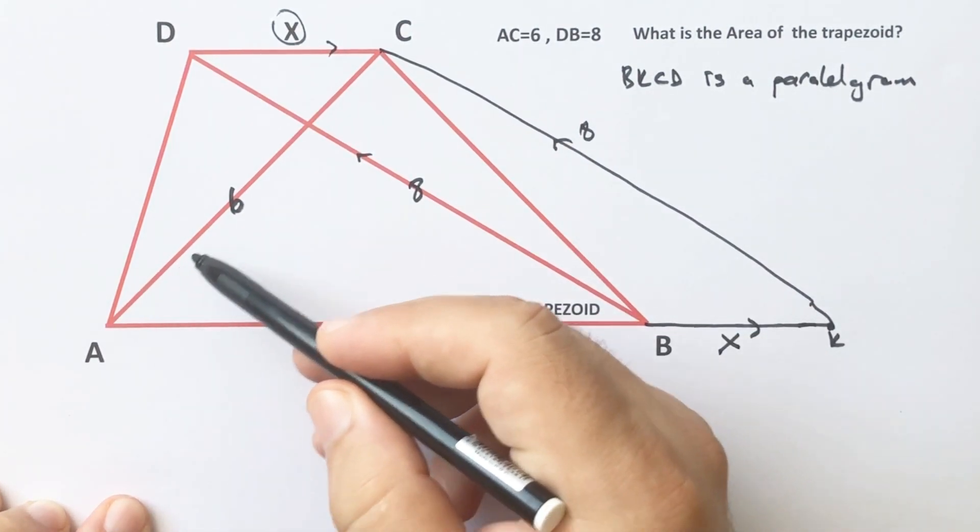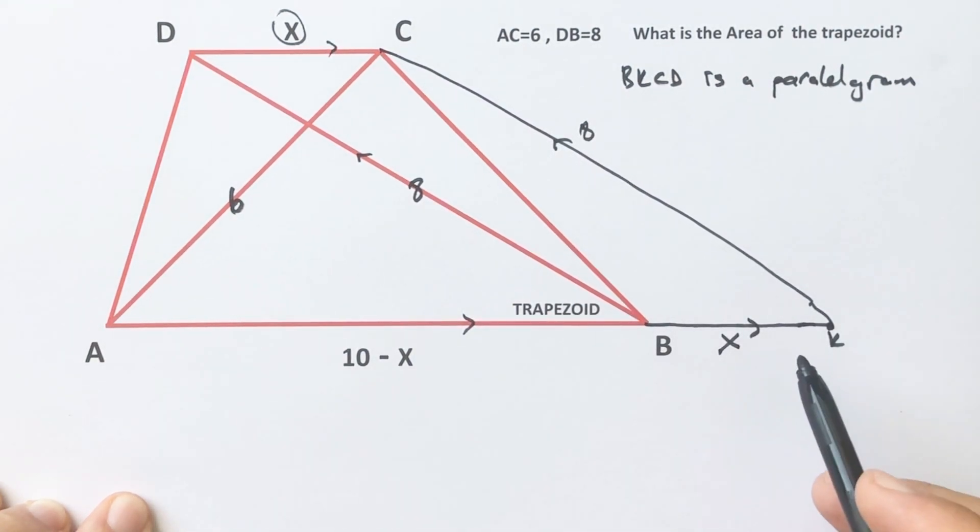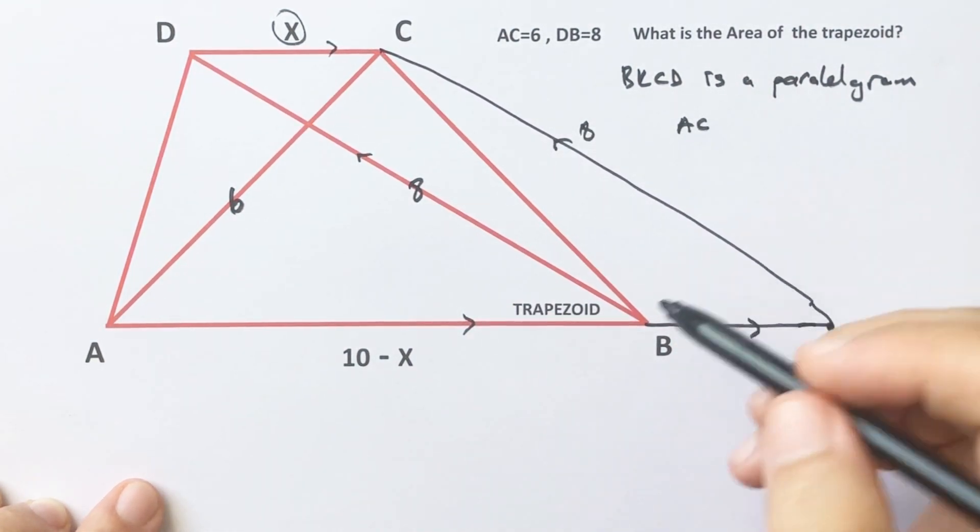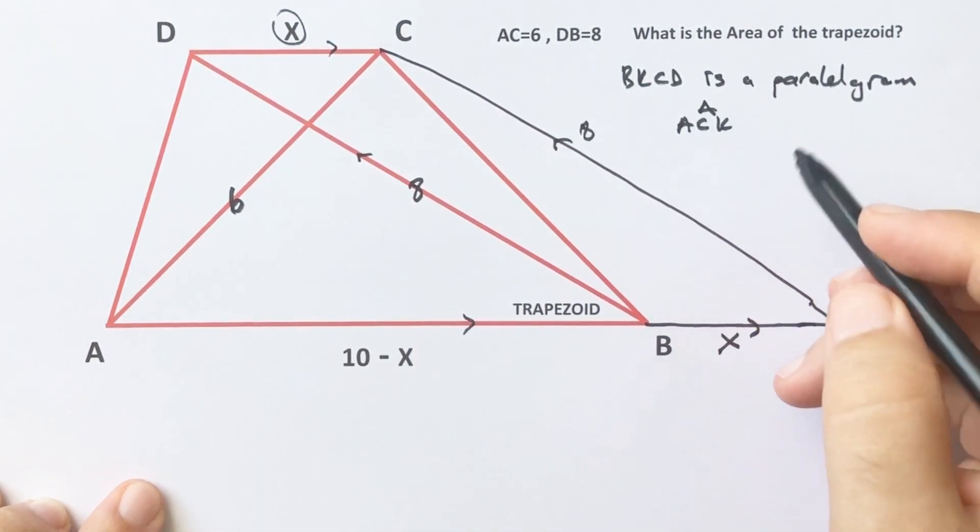Now if you focus on triangle ACK, this triangle is a right triangle.